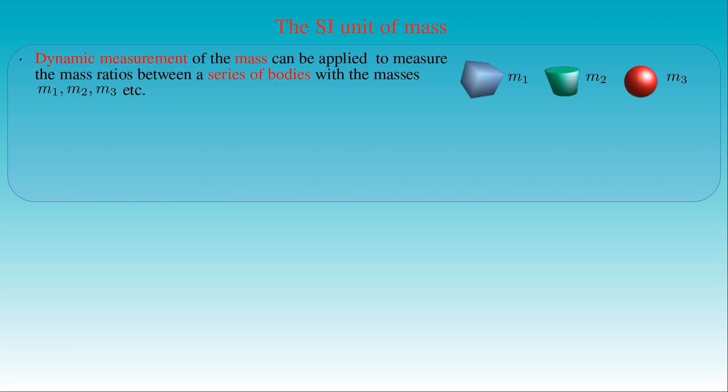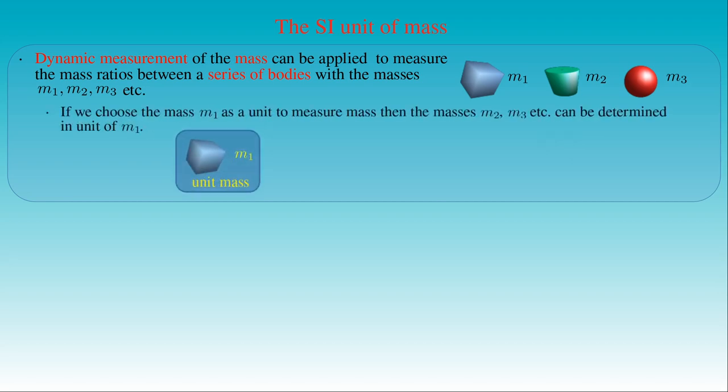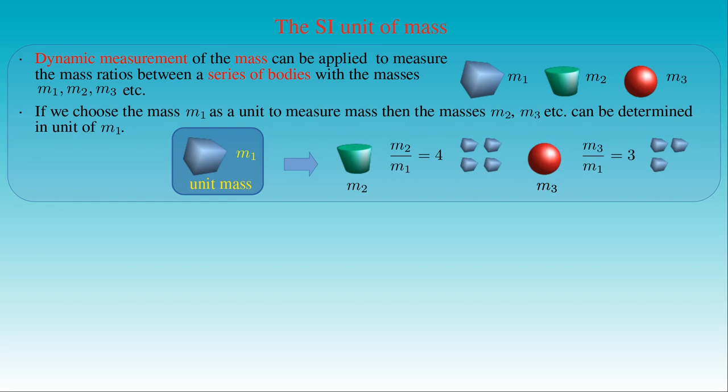The dynamic measurement of mass is applied to measure the ratios between the masses of different bodies, which allows us to define the unit of mass in physics. With the dynamic method, we can measure mass ratios for any series of arbitrary bodies with masses M1, M2, M3, and so forth. If we choose the mass M1 as a unit to measure mass, then the masses M2, M3 and so forth can be determined in units of M1. For example, if the ratio of mass M2 of a cylinder to the unit mass M1 is 4, then the mass of the cylinder equals 4 in units of M1. Similarly, if the ratio of mass M3 of a sphere to M1 is 3, the mass of the sphere equals 3 in units of M1.